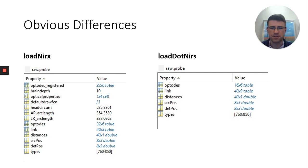So you'll see optodes registered, brain depth, optical properties, default draw function, which is actually what we're going to talk about today, head circumference, AP, which is, I believe, anterior posterior arc length. So the arc that goes that way, left to right arc that goes that way. And then following that, finally, you have the same information going from optodes down as the load.NIRx function.